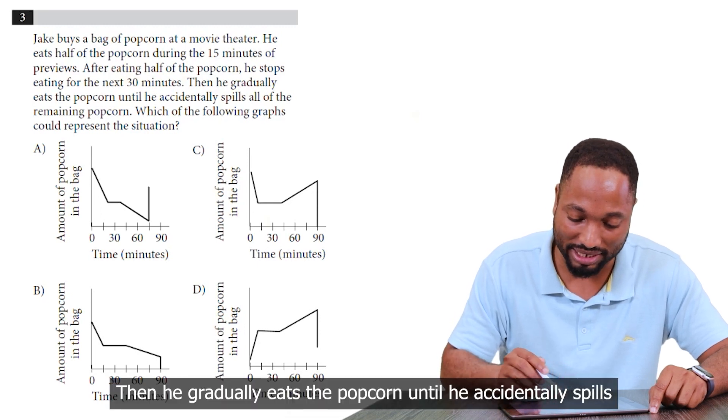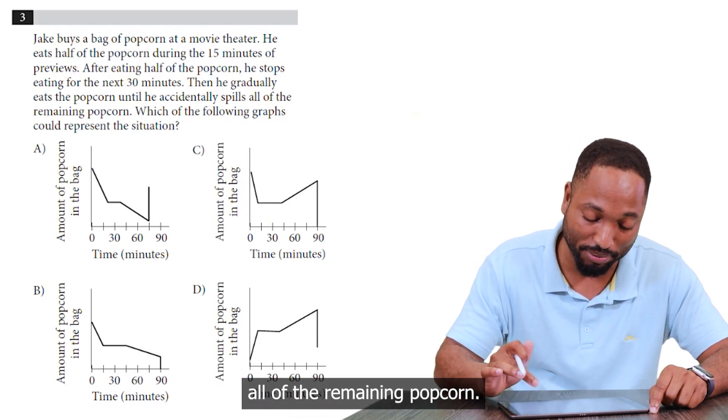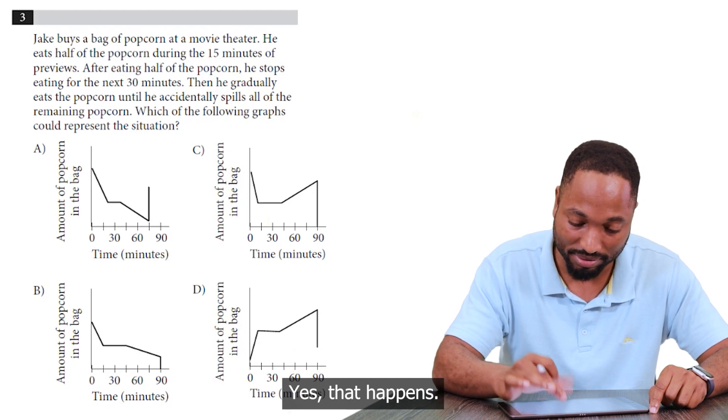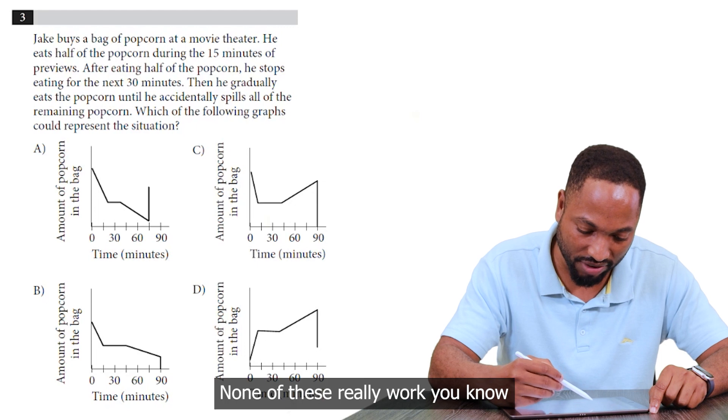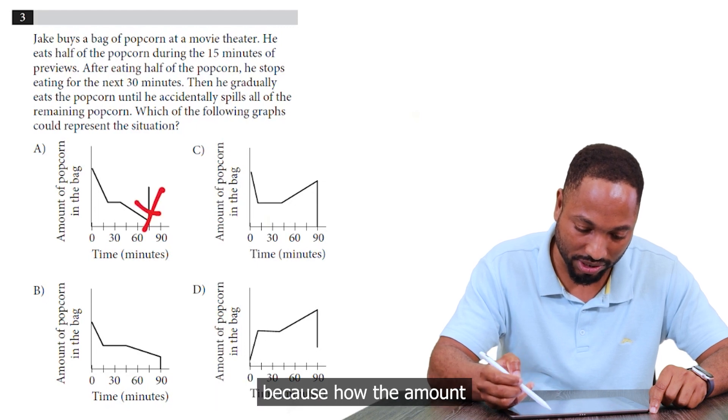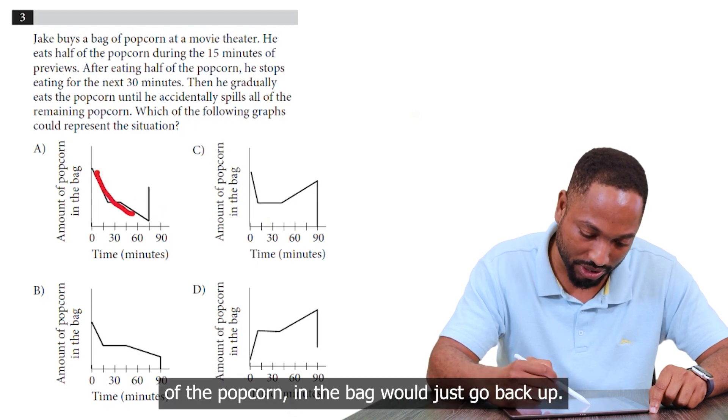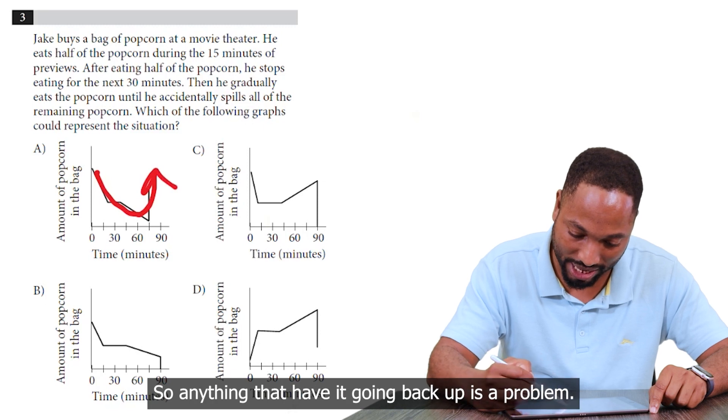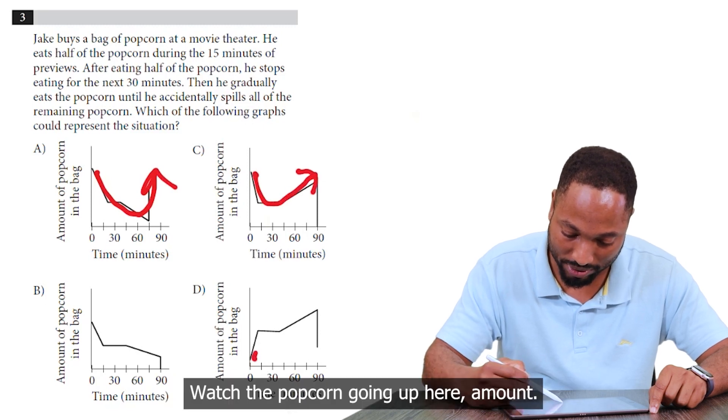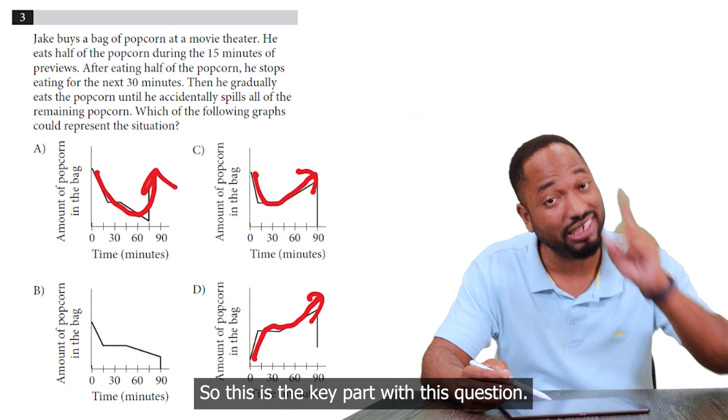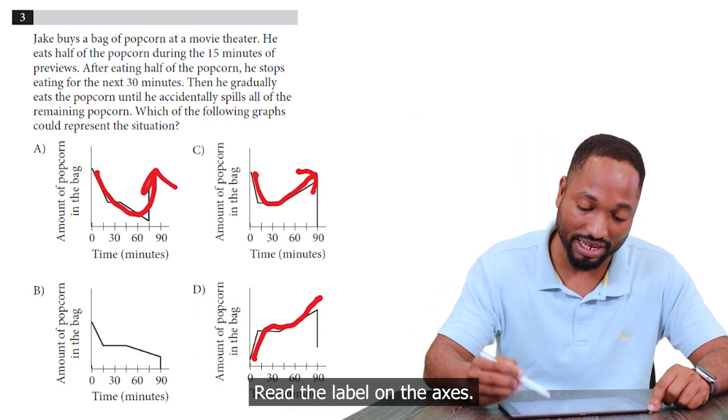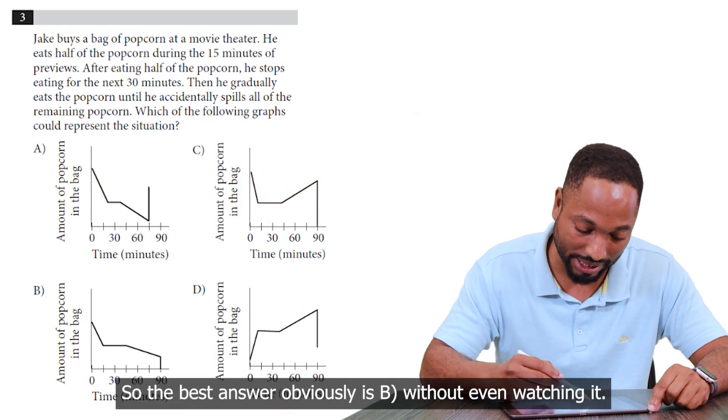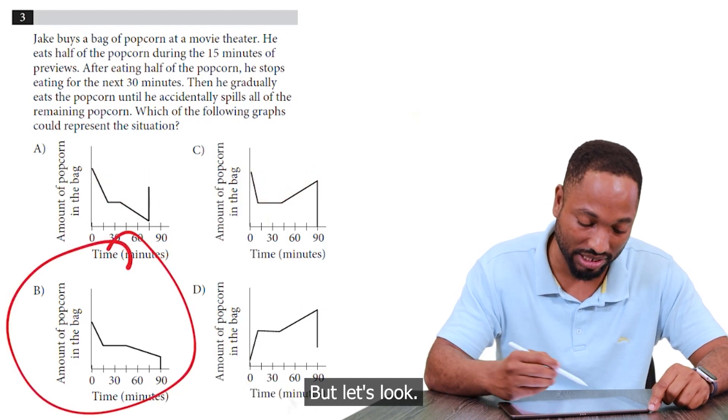Then he gradually eats the popcorn until he accidentally spills all of the remaining popcorn. Yes, that happens. So let me see if you can figure out what's going on with Jake here. None of these really work because the amount of the popcorn in the bag would just go back up. So anything that has it going back up is a problem. Watch the popcorn going up here. So this is the key part for this question. Read the label on the axis. You don't make up your own thing. So the best answer, obviously, is B without even watching it. But let's look.